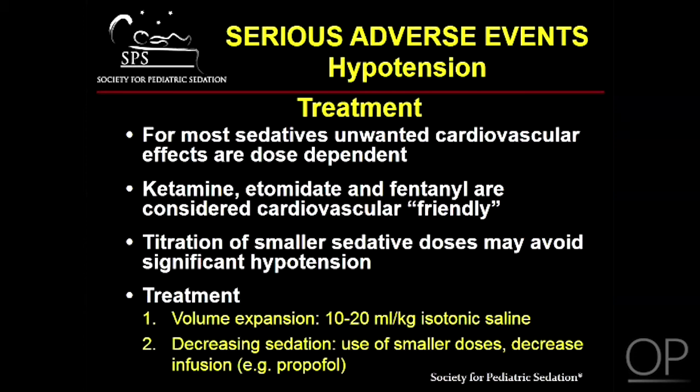For most sedatives, unwanted cardiovascular effects are dose-dependent, and conversely, some agents such as ketamine and etomidate have a favorable cardiac profile. Proper agent choice and titration of smaller doses can be used to avoid hypotension in at-risk patients. If hypotension does occur, it can typically be resolved with volume expansion, using 10 to 20 cc's per kilo of isotonic saline, and by decreasing the sedative doses and/or infusion rates.